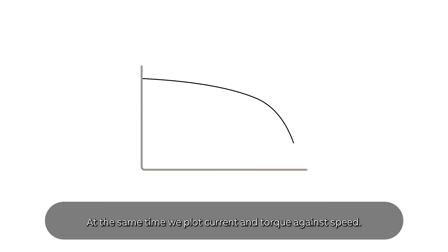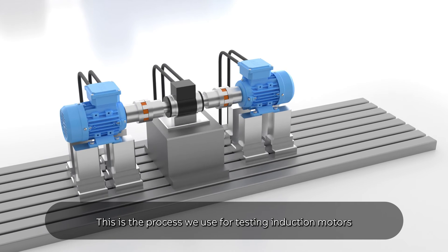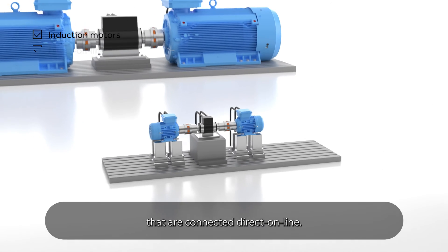At the same time we plot current and torque against speed. This enables us to find the starting current, starting torque and minimum and maximum torque. This is the process we use for testing induction motors that are connected direct online.